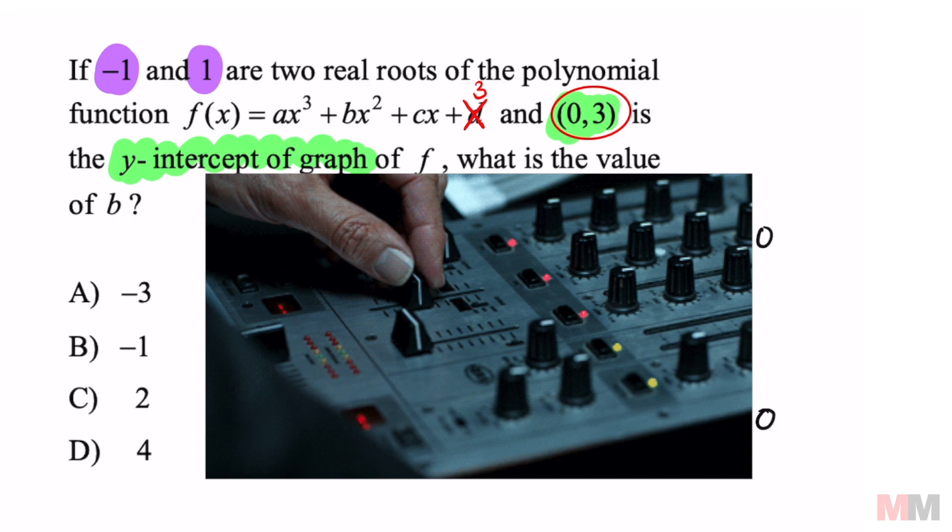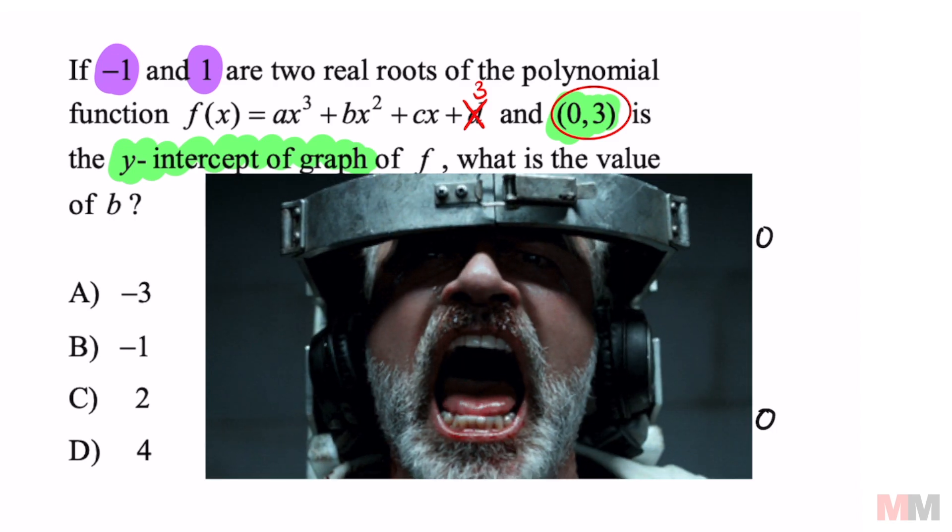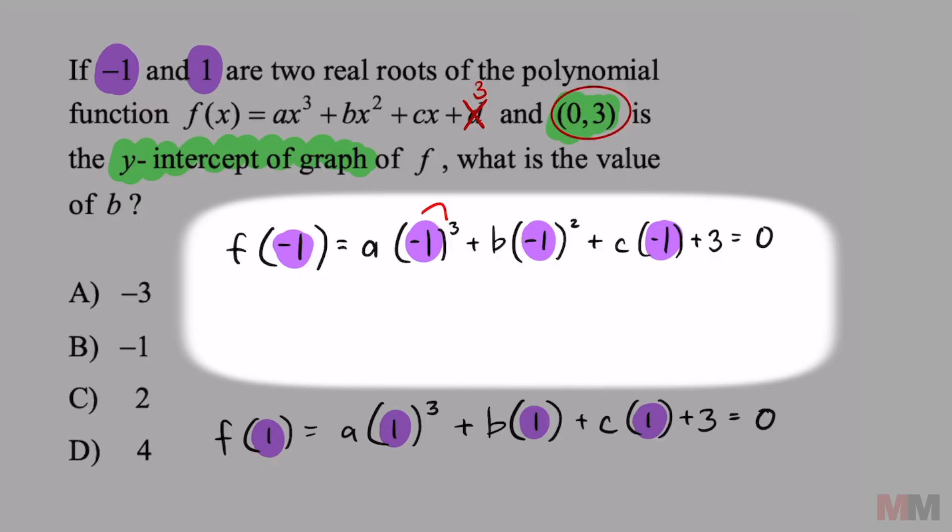Here's where the magic happens, because they're not going to really torture you that much. Negative 1 to the third is going to give me negative 1 times a, which is negative a. Remember, anything squared is going to be positive. So that's going to turn into a b. This is going to turn into a negative c plus 3 equals 0.